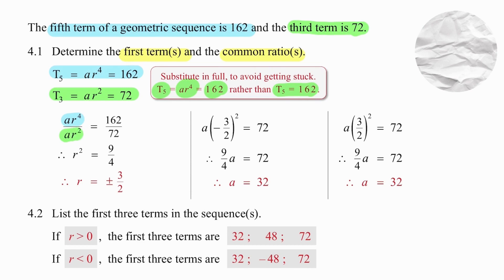So dividing ar⁴ by ar² gives us a very useful result of r². Dividing 162 by 72 gives us 9 over 4. So we know that r is equal to plus or minus 3 over 2. Do not forget that when r² is equal to 9 over 4, we need to take plus or minus the square root of that value because of the square.